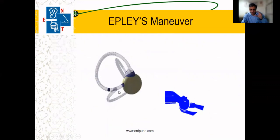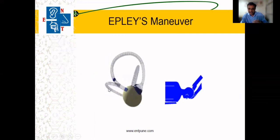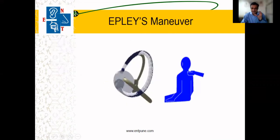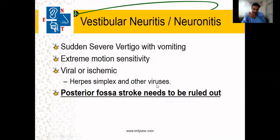We give this position to the patient. The second position brings the particle to the other part where we take it 45 degrees on the opposite side, then rotate the patient facing downwards. We bring it down, and when the patient sits up, the calcium carbonate crystal has gone back into position. This is what we do in Epley's maneuver.